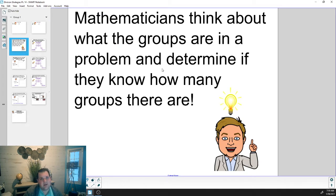Yesterday we talked about how mathematicians really think about what the groups are in a problem and determine if they know how many groups there are. When they're looking at a division problem, they first ask themselves what are the groups in this problem, because they can change depending on the context. Then they ask themselves do we know how many are inside those groups.